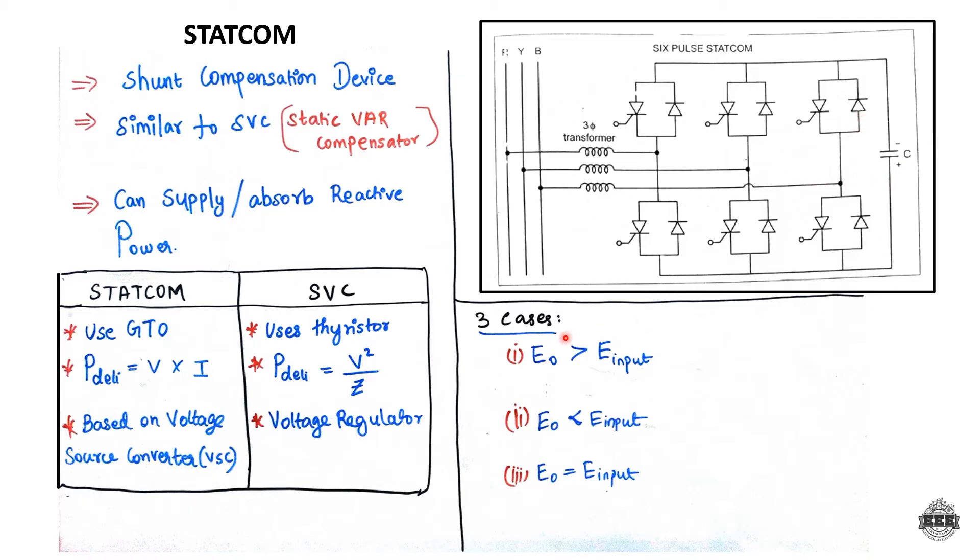There are three key differences between STATCOM and SVC. STATCOM uses GTO (Gate Turn-Off thyristor), while SVC uses thyristors in anti-parallel connection.